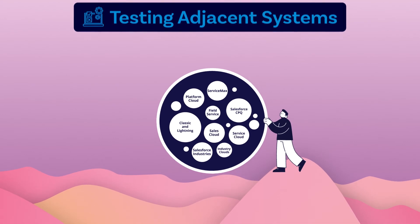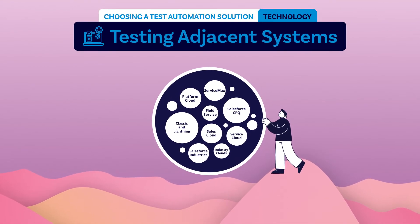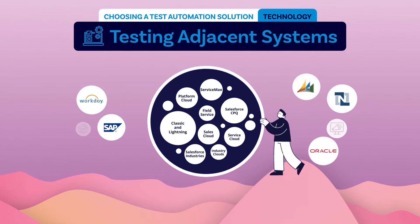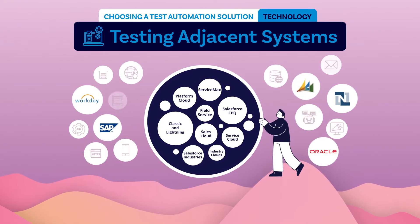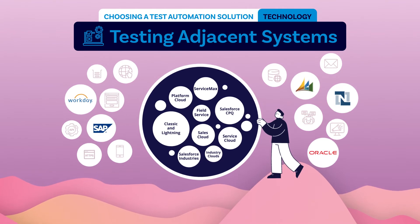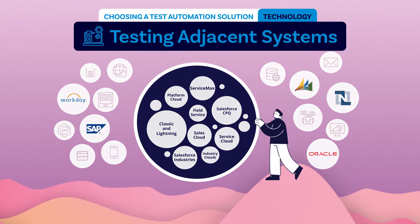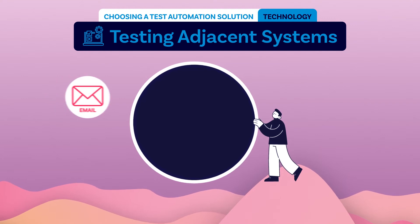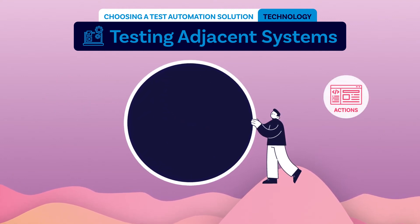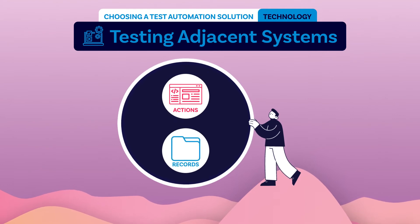A test automation solution needs to be able to test adjacent systems. Every Salesforce platform connects to other enterprise systems and custom integrations, so it's important that your testing solution allows you to test an entire workflow end-to-end. Your test automation solution should support testing things like email-to-case flows, Salesforce actions triggering actions in external systems, and website actions creating records in Salesforce.